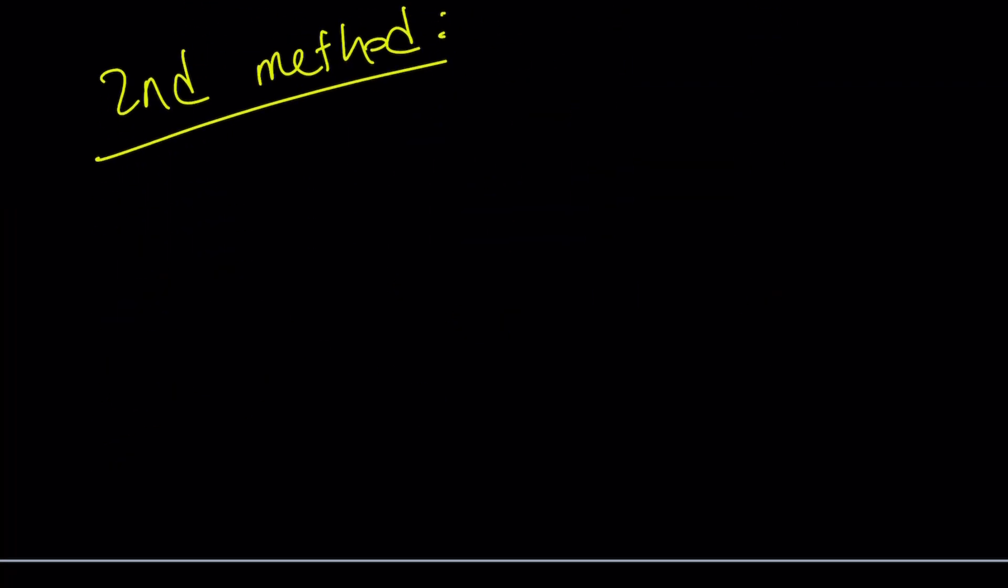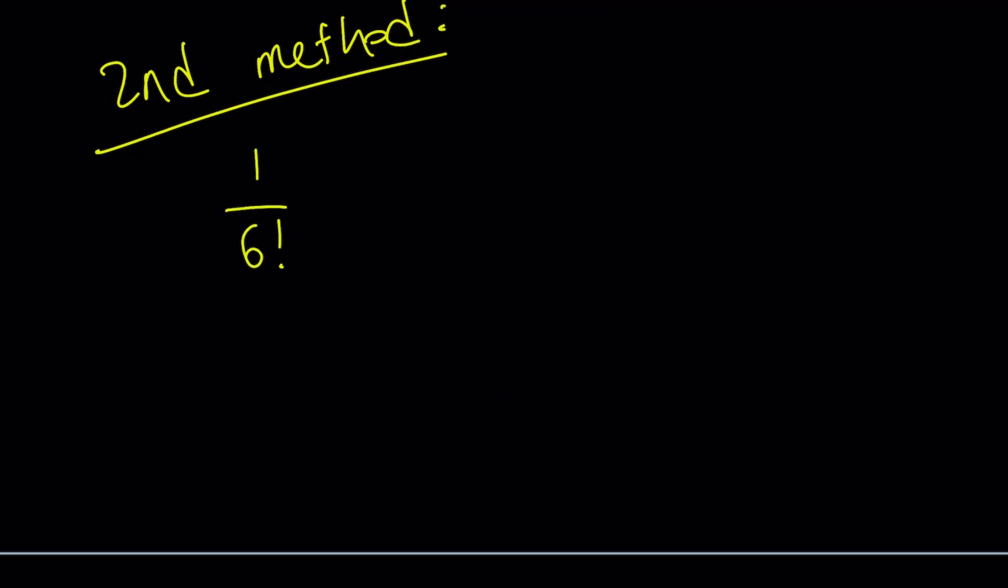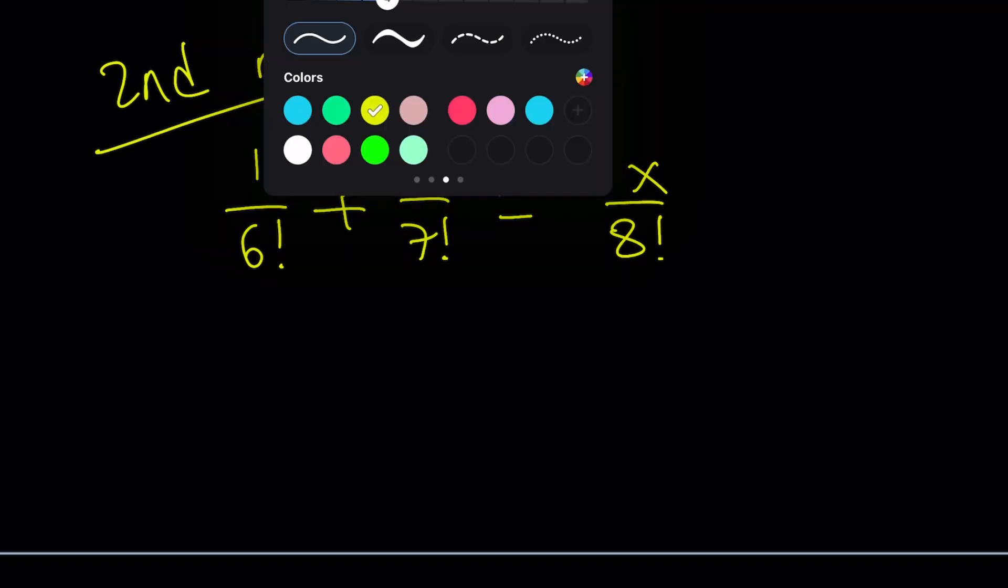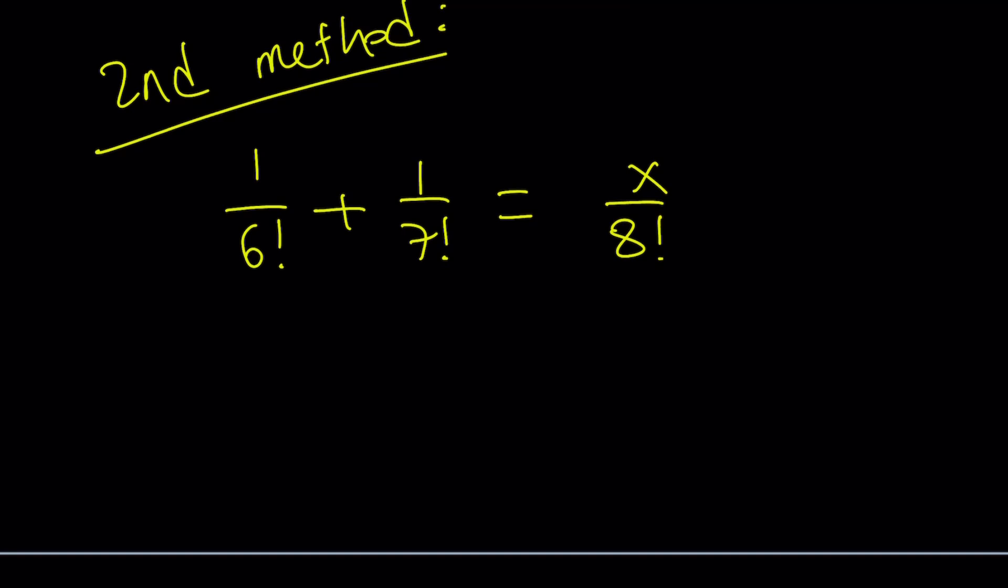All right. So what is our original problem? 1 over 6 factorial plus 1 over 7 factorial equals x over 8 factorial. Actually, it's pretty much the same thing. It's just slightly different. But I kind of like the second method because it simplifies quickly, sort of like you get rid of fractions right away. So since 8 factorial contains a 6 and 7 factorial, I'm going to go ahead and multiply both sides by that. And that's actually good because it is going to simplify and we're going to end up with x. So whatever is on the left hand side, that's the answer.